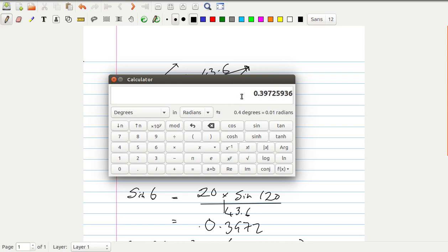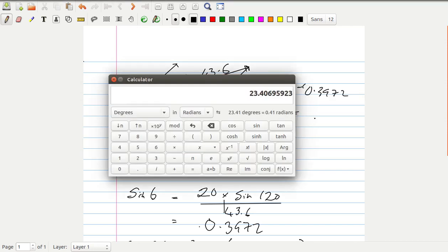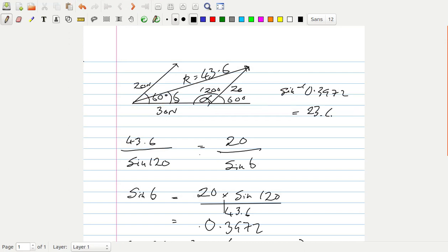If the calculator is doing funny things, we get 23.4 degrees. So we have beta equals 23.4 degrees, and R equals 43.6 newtons. So that is the resultant force of two forces that aren't at right angles to each other.